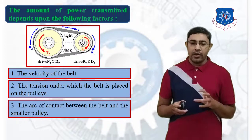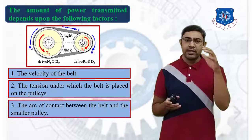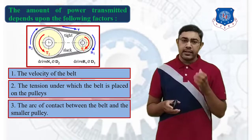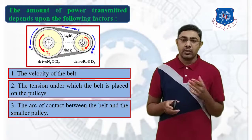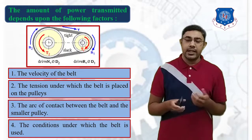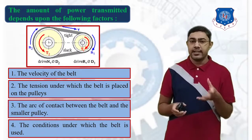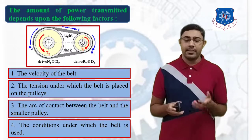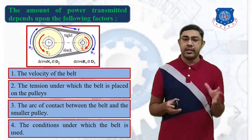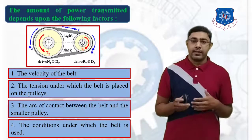The third factor is the arc of contact between the belt and the smaller pulley — how much of the belt is in contact with the pulley, and the angle of contact also depends on the amount of power transmission. The fourth factor is the condition under which the belt is used. These four factors must be considered when designing a belt drive for power transmission.